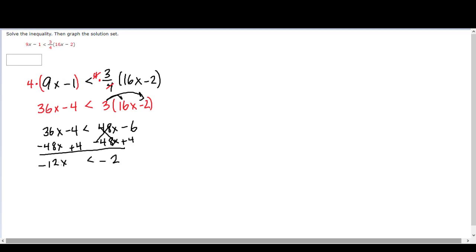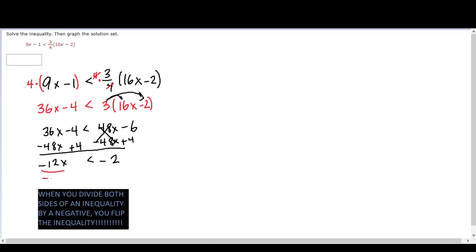So this is a good example of the one issue that we need to be mindful of when we are working linear inequalities. When you divide both sides of an inequality by a negative number, you flip the inequality. So right here, I'm going to divide by negative 12 on both sides, because that's what I need to do here to work this problem.